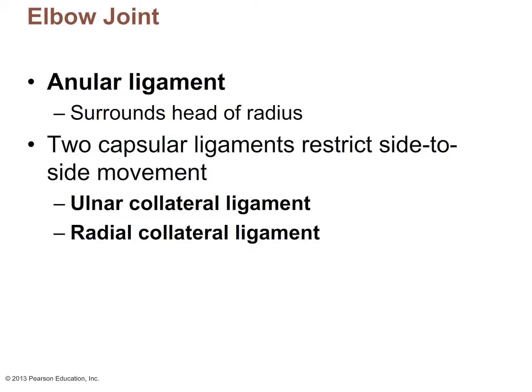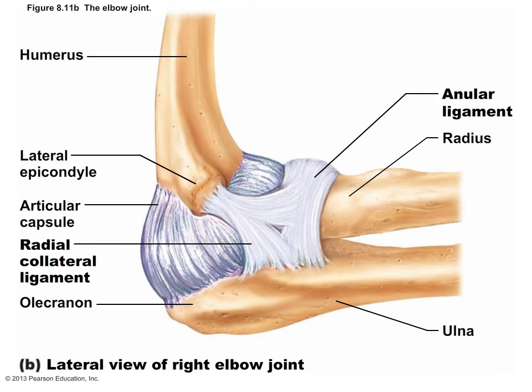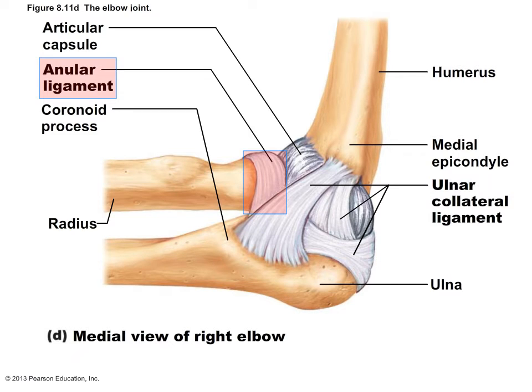Unlike the knee joint, which has many supporting ligaments, there are very few supporting ligaments in the elbow — similar in this sense to the shoulder. The main ligaments stabilizing the elbow include the annular ligament and two capsular ligaments: the ulnar collateral ligament and the radial collateral ligament. The articular capsule is quite loose, allowing free range of motion in flexion and extension. The two collateral ligaments prevent side-to-side movements. The annular ligament surrounds the head of the radius and holds it tight against the side of the ulna, though luxations do sometimes occur.